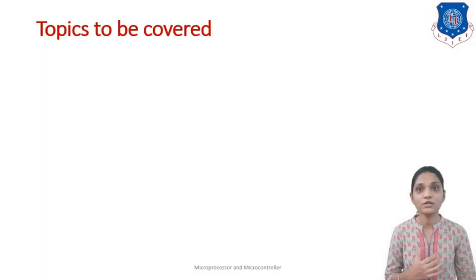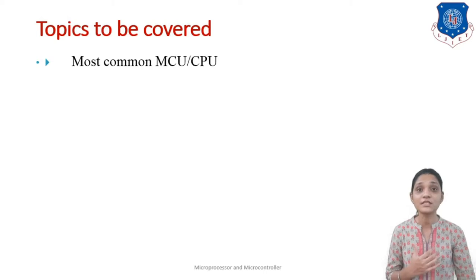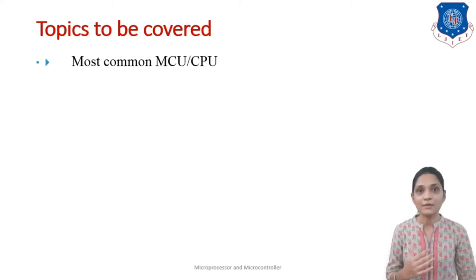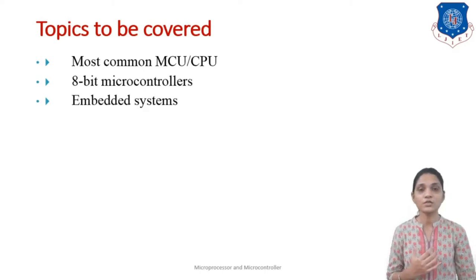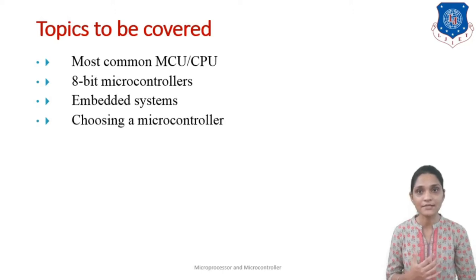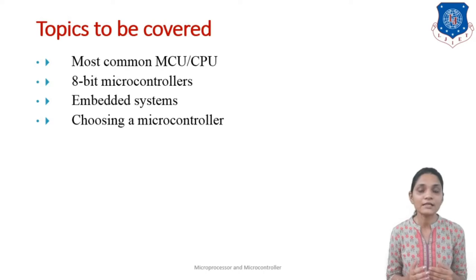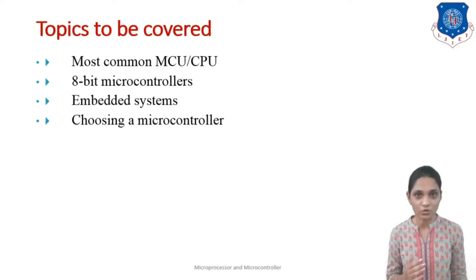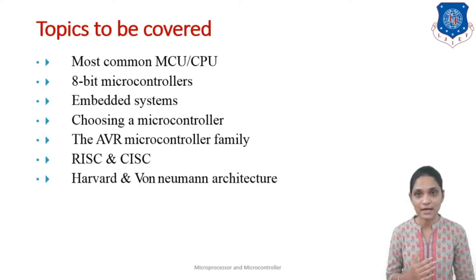Let me see what are the outlines for this session. First, we will see the most common MCU and CPU units that are used. Then we will see the 8-bit microcontrollers, embedded systems, and the criteria to keep in mind when choosing a microcontroller. Then we will see the AVR microcontroller family and RISC and CISC architecture and Harvard and Von Neumann architecture.